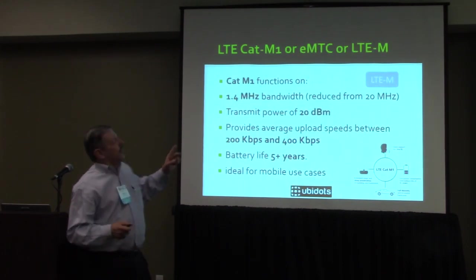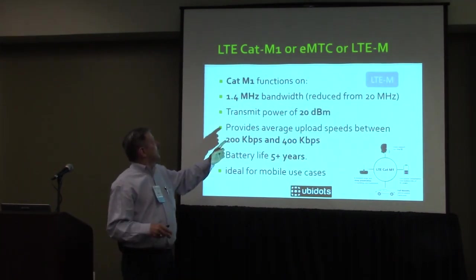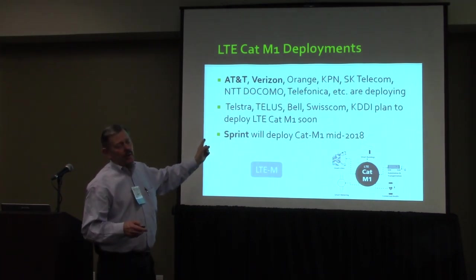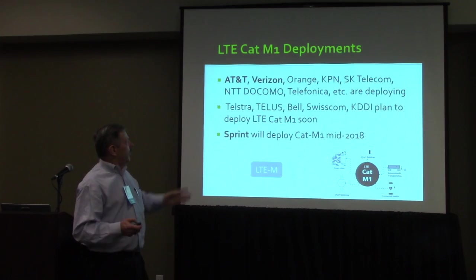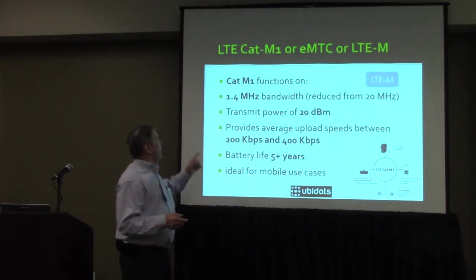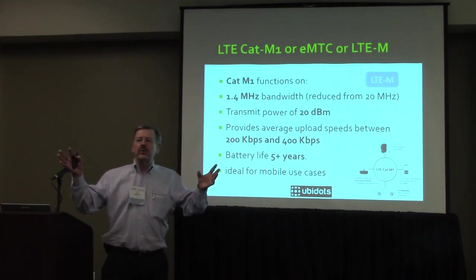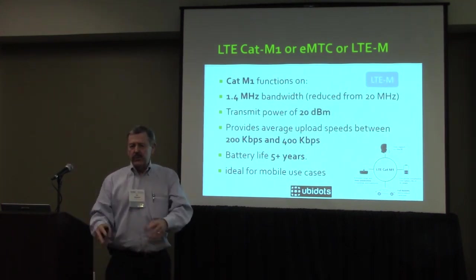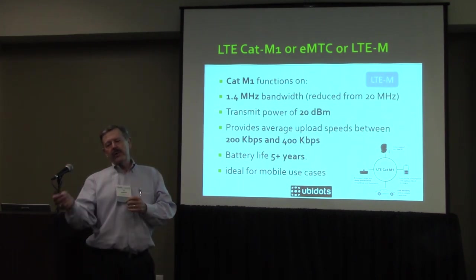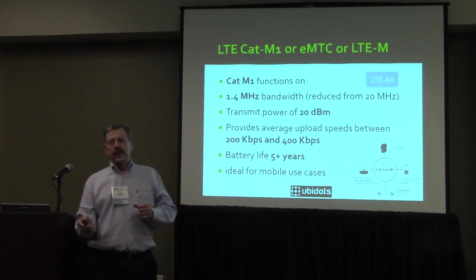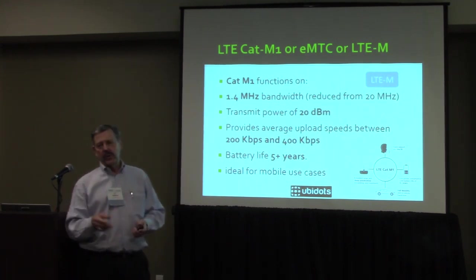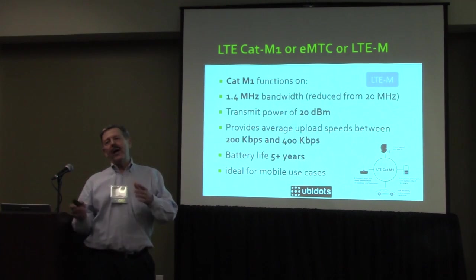CAT-M1 is being deployed right now. AT&T and Verizon are deploying in the United States; Telstra in Australia and Telus and Bell in Canada are deploying it now. CAT-M1 is a reduced version of 4G technology — instead of 20 MHz, they're down to 1.4 MHz, to reduce power consumption and better fit these devices. It can still send up to a megabyte per second, typically around 300 kilobits. That's still fairly high for these devices and impacts battery life — expected to be a little over five years.